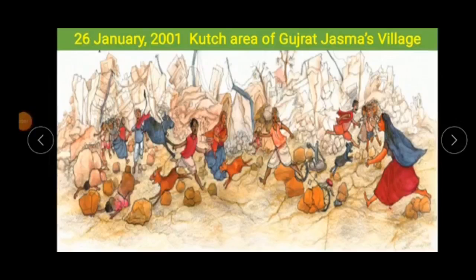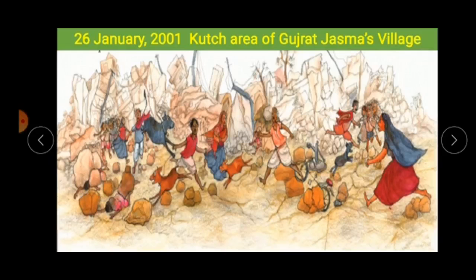Now I'm going to tell you what happened on 26 January 2001 in the Kutch area of Gujarat. Jasma lived in the Kutch area of Gujarat. She was 11 years old when there was an earthquake. Everyone from the village — children and old people — had gathered in the school ground to watch the Republic Day parade on TV. Suddenly the ground started shaking, people were scared and started running here and there.